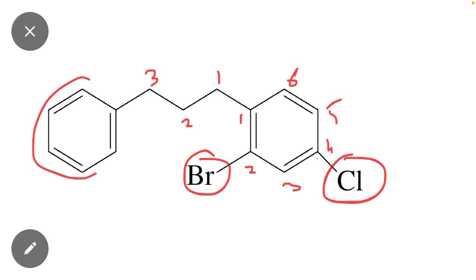One, two, three - this is a phenyl group which is present at position number 3. Three phenyl propyl. The name of this substituent is three phenyl propyl. Keep in mind this point.